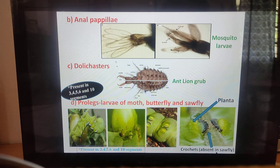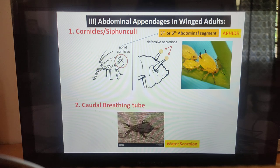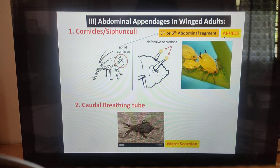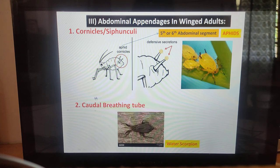Abdominal appendages in winged insects include cornicles, also called siphunculi. Aphids have a pair of short tubes known as cornicles projecting from the dorsum of the fifth or sixth abdominal segment. They permit wax coating which perhaps serves as protection against predators — defensive secretions. Important bits: cornicles/siphunculi are present in aphids, on the fifth or sixth abdominal segments.